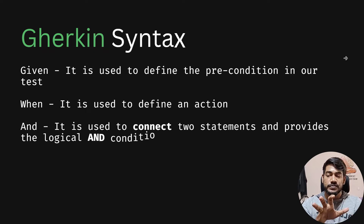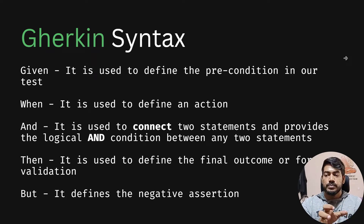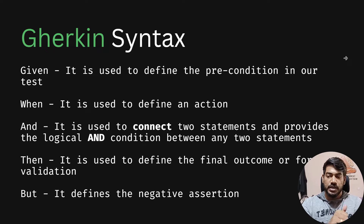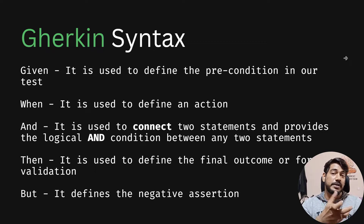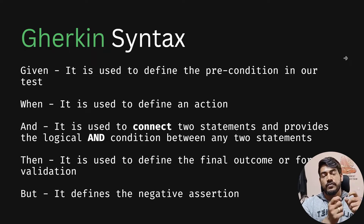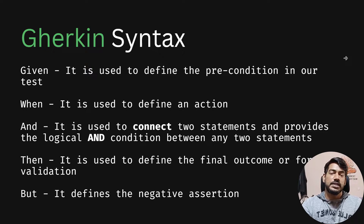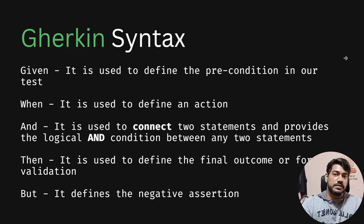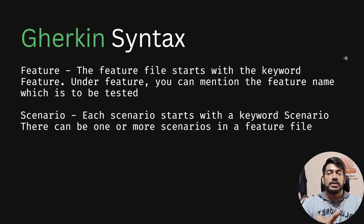Apart from that, we are mostly going to use five keywords, so understand the meaning thoroughly: Given, When, And, Then, But. Given is basically like your precondition. When is used to define an action. For the login scenario, entering the username and password are my preconditions — so I use Given. When I click on the login button, I'm expecting some outcome. If it's a positive scenario we use Then; if it's negative we use But.